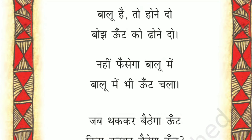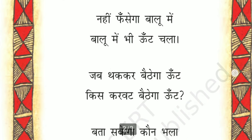Balu hai hai toh ne do — balu means sand, if sand is there let it be. Boj oont ko dhone do — boj means heavy load, dhona means let it carry, so let the camel carry the load. Nahi fasega balu mein — fasega means stuck, it won't get stuck in the sand. Balu mein bhi oont chala — in the sand also the camel is walking.